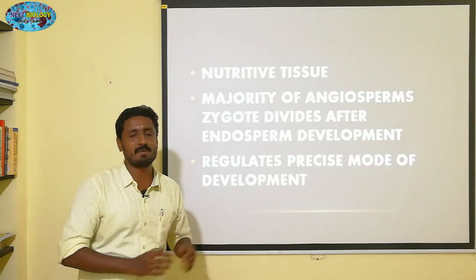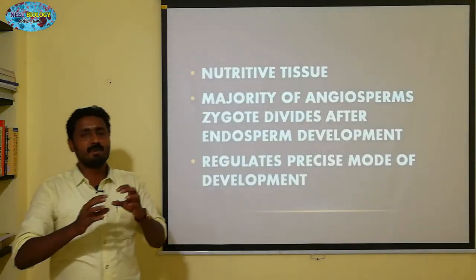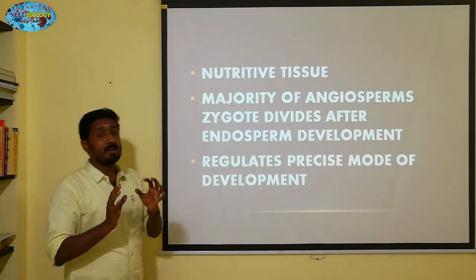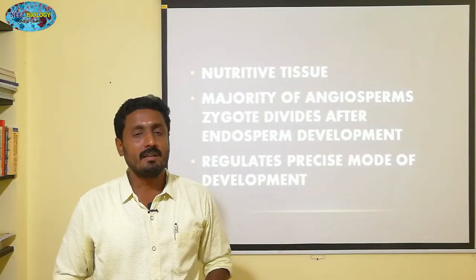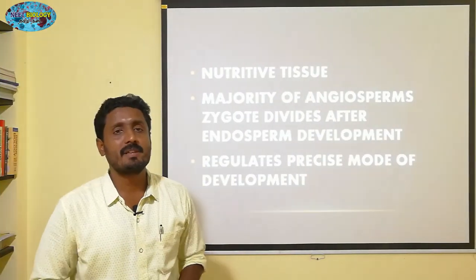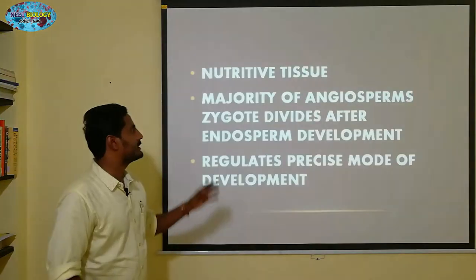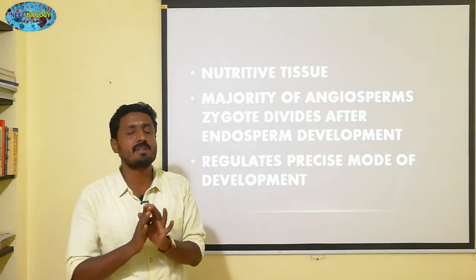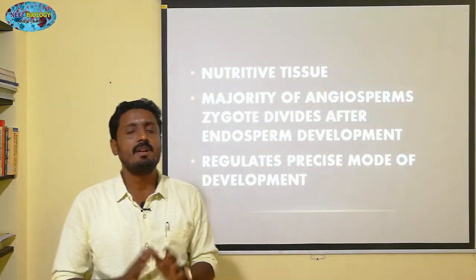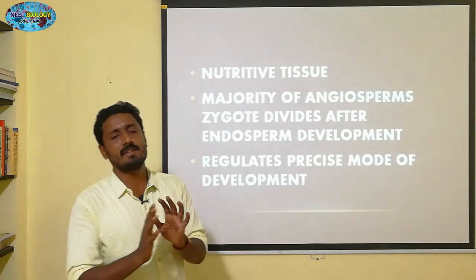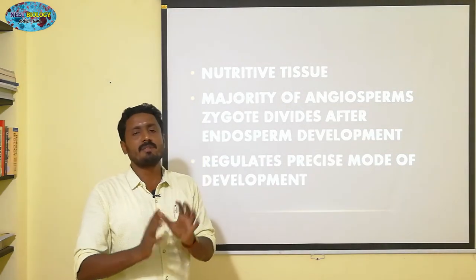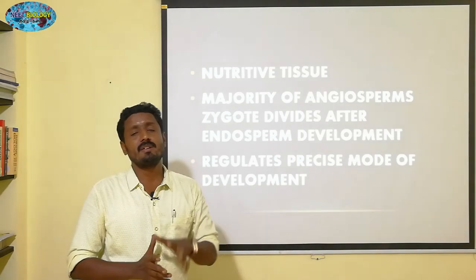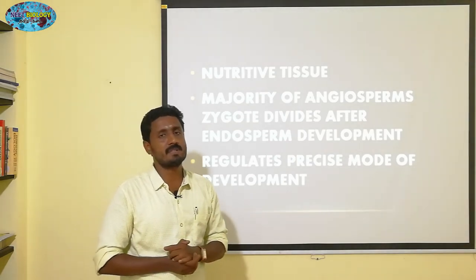I am talking about angiosperms. But in gymnosperms, the endosperm is different. In angiosperms there is a triple fusion option and a double fertilization option, resulting in a triploid endosperm. In gymnosperms, there is a haploid endosperm — no triple fusion occurs.